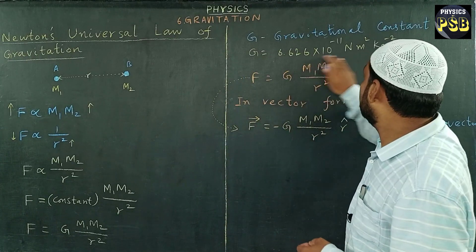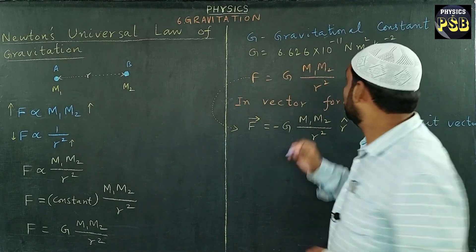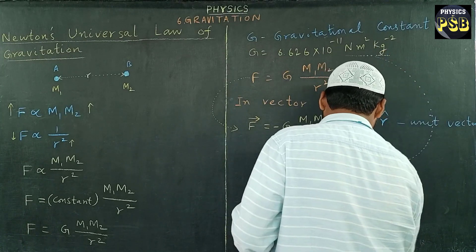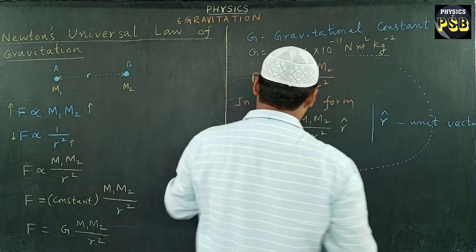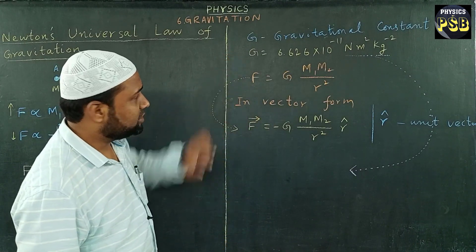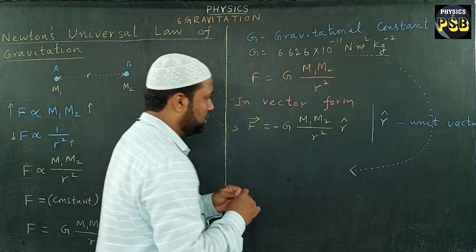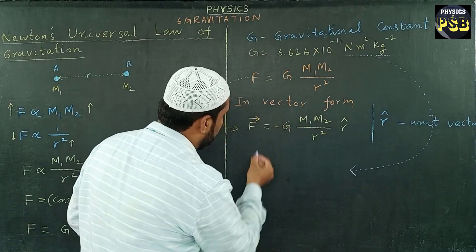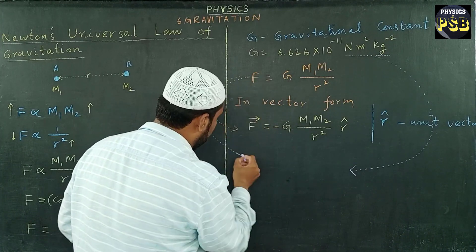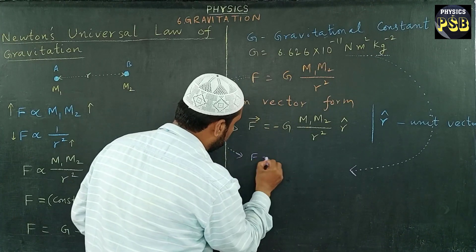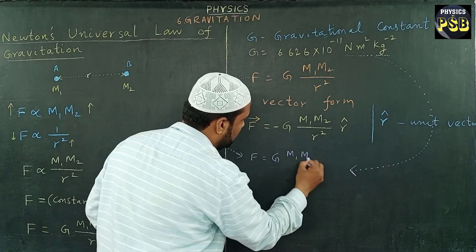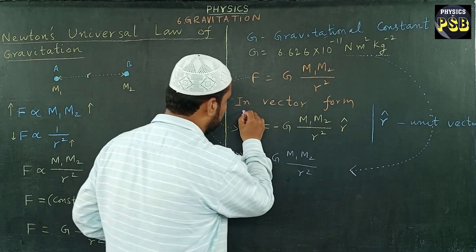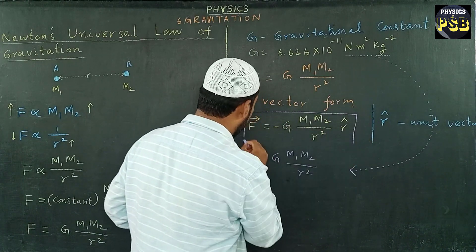Let me explain you how do we get this unit. If I rearrange this equation to get the value of G, the expression for G, then I write this as F equals to G m1 m2 upon R square. I am going to box this, this is the final expression that I have obtained.